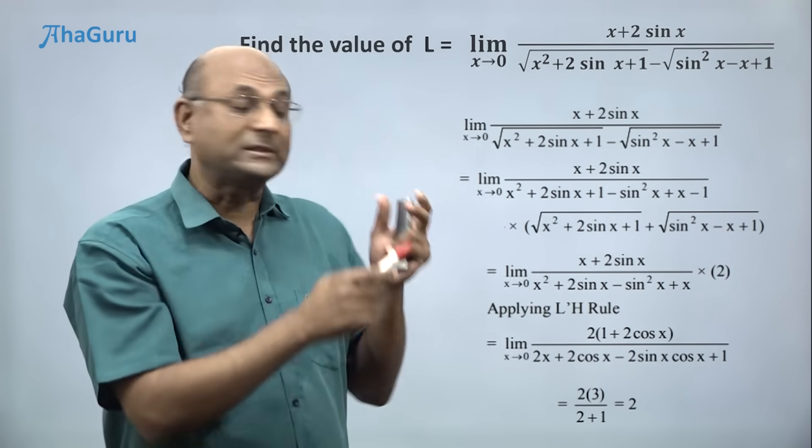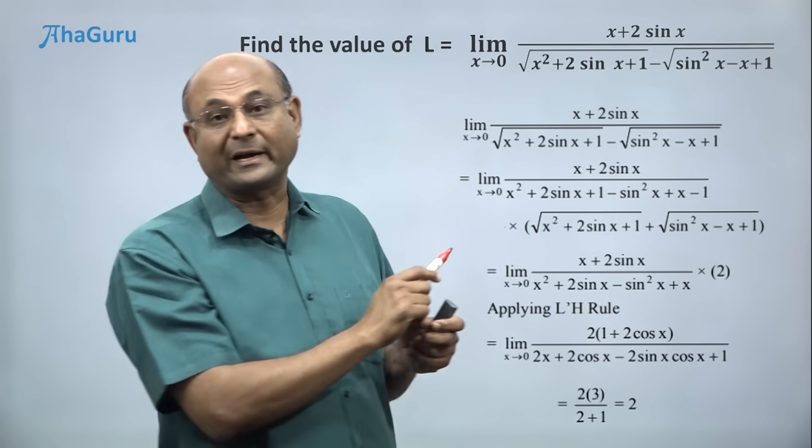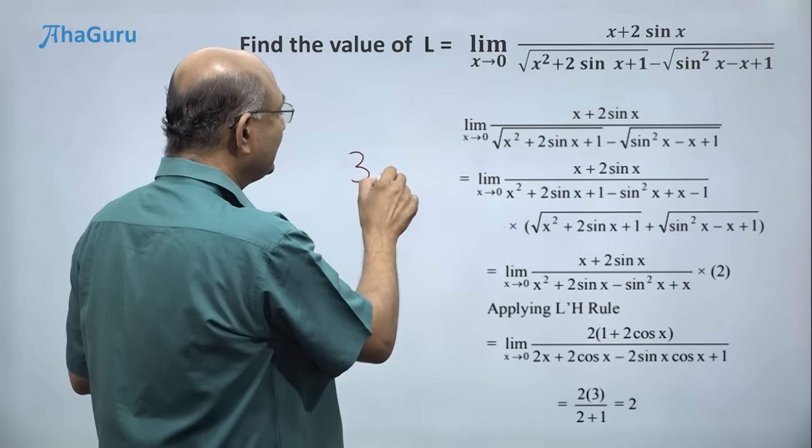You multiply and divide by the conjugate, you simplify, apply L'Hôpital rule, differentiating the numerator and denominator. This easily takes us 3 minutes.